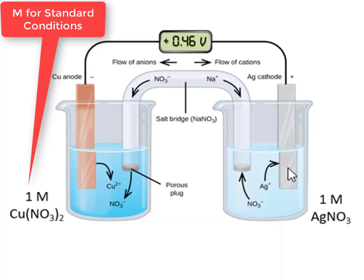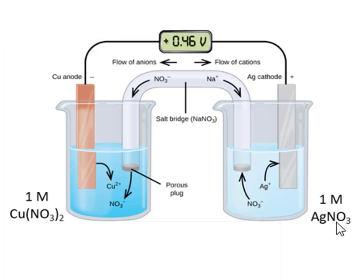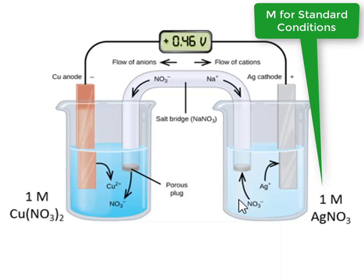In the right beaker, we place a piece of silver metal representing the silver cathode. And then we also represent one molar silver nitrate in that solution.